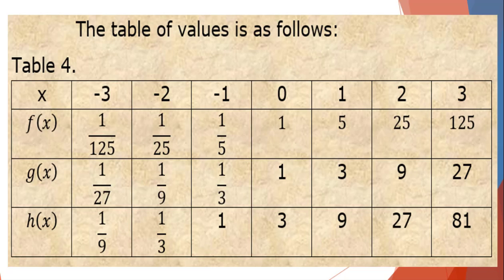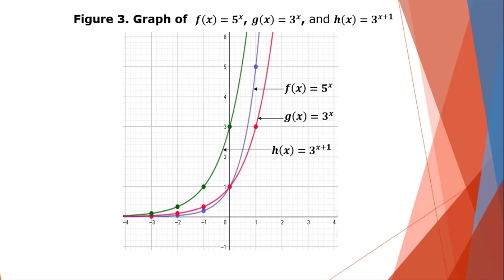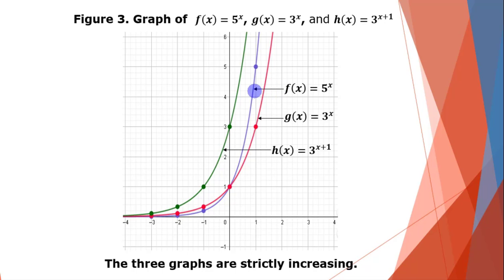For the graph, f(x) = 5 raised to x is the blue-colored curve. At x = 0, f = 1; at x = −1, f = 1/5; at x = −2, f = 1/25; at x = 1, f = 5, and so on.